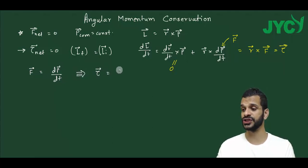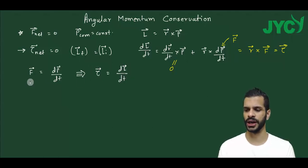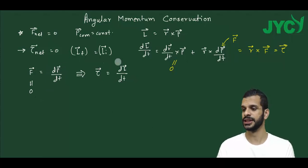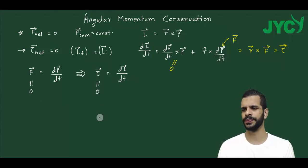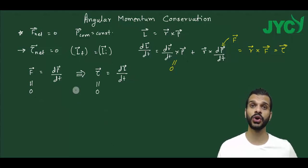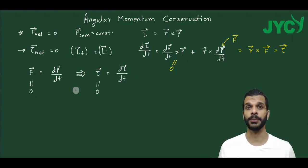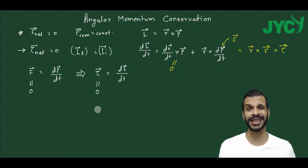So torque is the rate of change of angular momentum. When force is zero, rate of change of momentum is zero, so momentum is conserved. Similarly, when torque is zero, rate of change of angular momentum is zero, so angular momentum is conserved. In this session we will solve some basic examples to build real understanding.